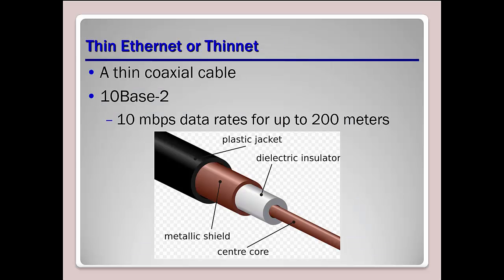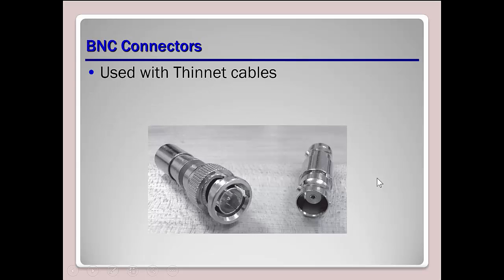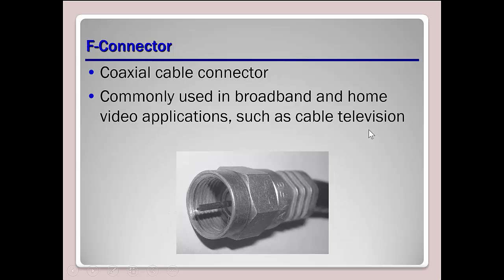Thin Ethernet versus thick net: thin coaxial cable, 10Base, runs at 10 megabit data rates up to 200 meters for thin. A BNC connector — this is the bus or ring topology connector we would use. An F connector is what we're used to seeing when connecting cable television or into the back of our modem.